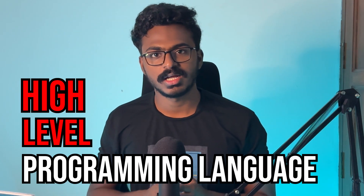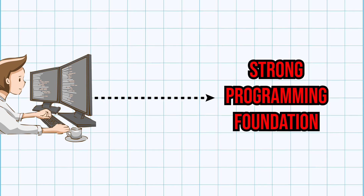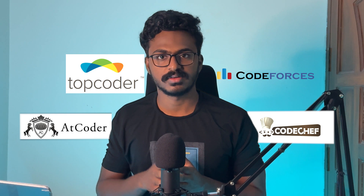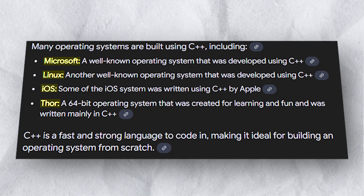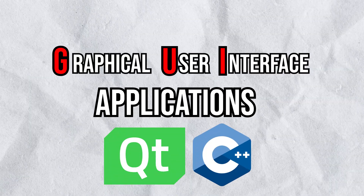Next is C++, which is an extension of C and a high-level programming language. C++ is also fast and efficient, with object-oriented programming support. If you have a strong programming foundation, C++ is a great choice, though it can be a difficult language to learn. C++ is widely used for competitive programming, operating systems, game development, and graphical user interface applications.